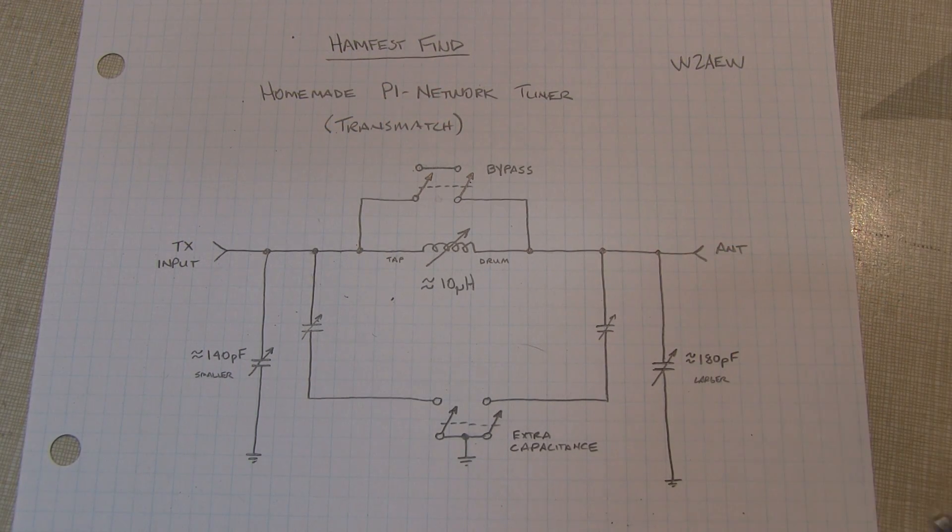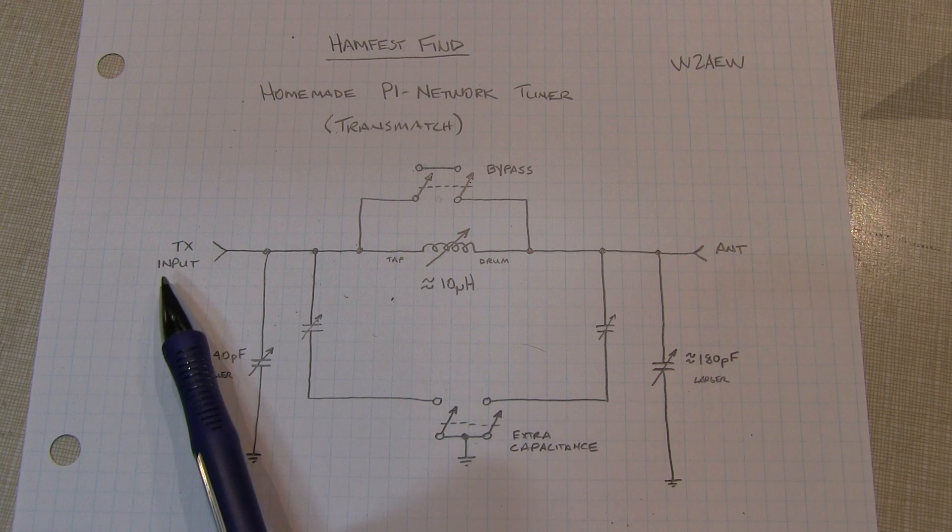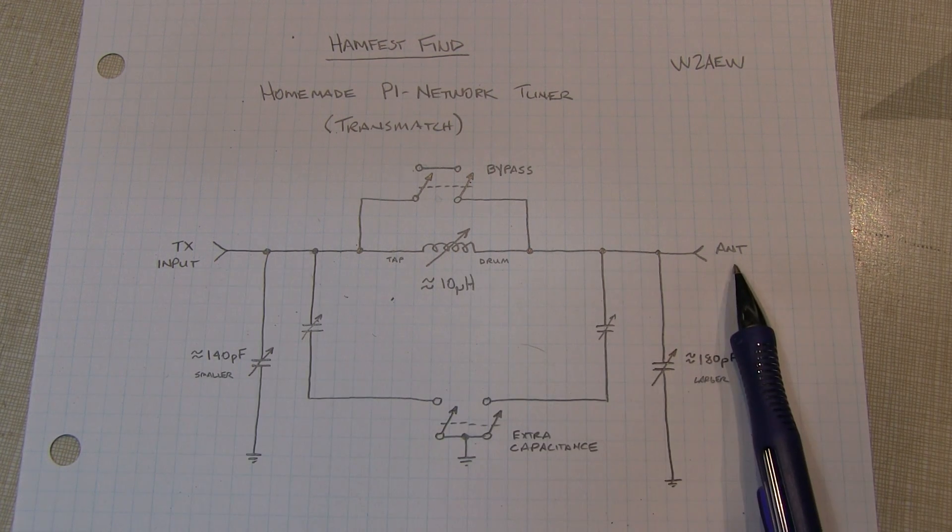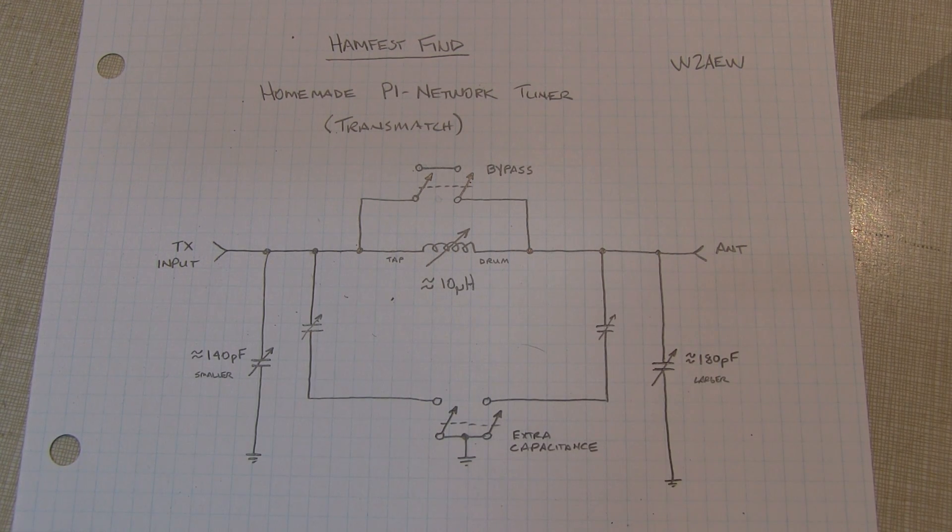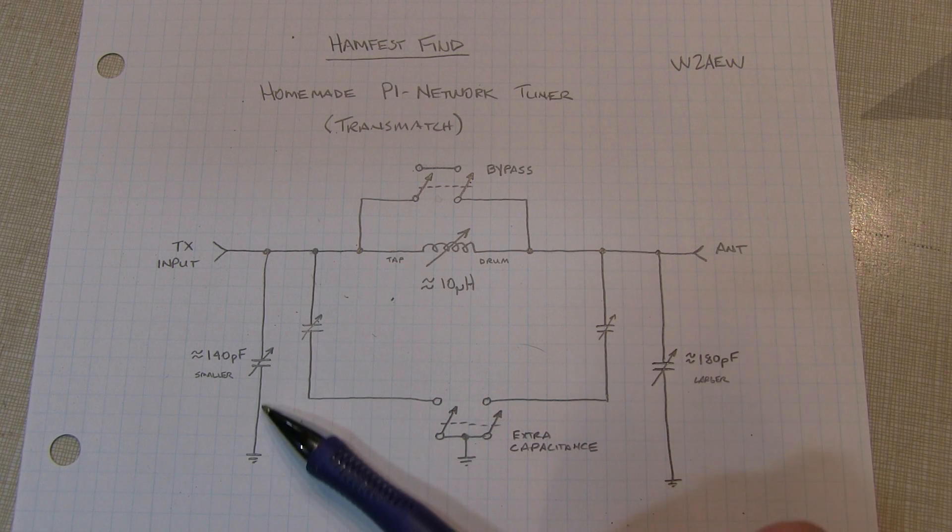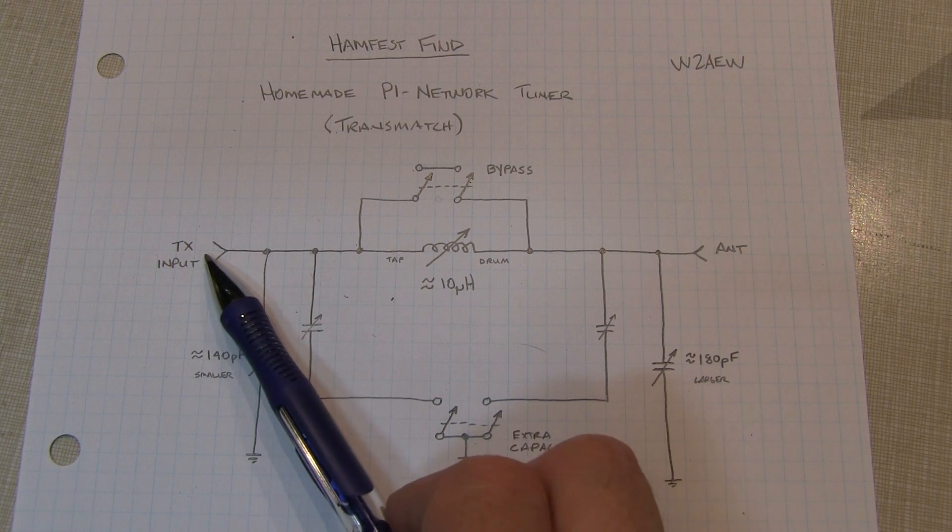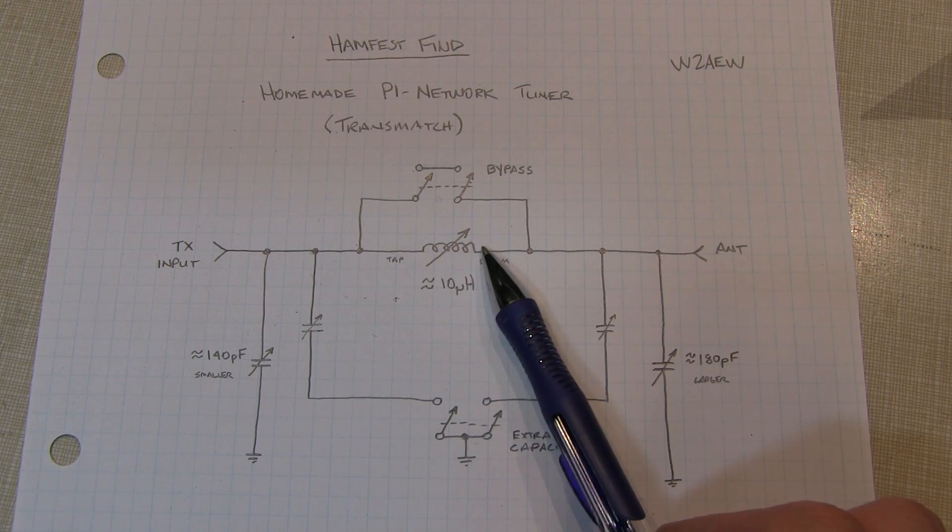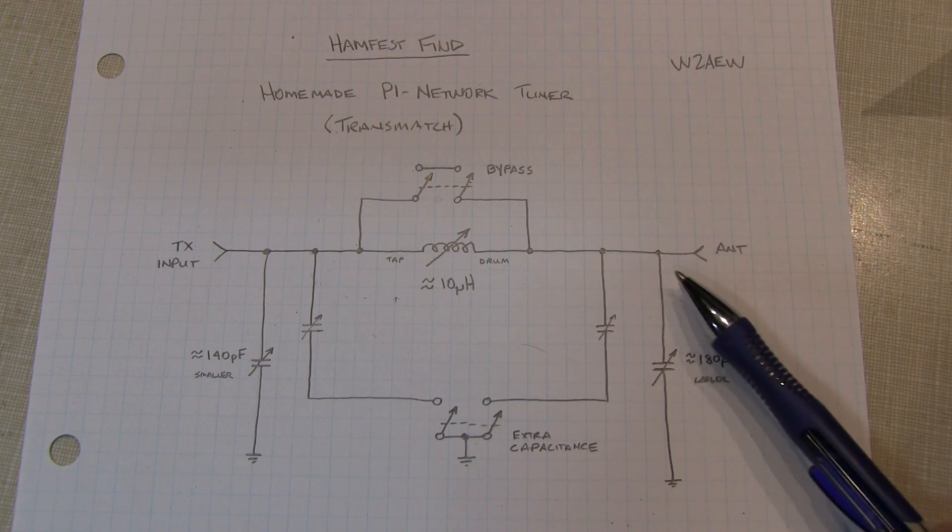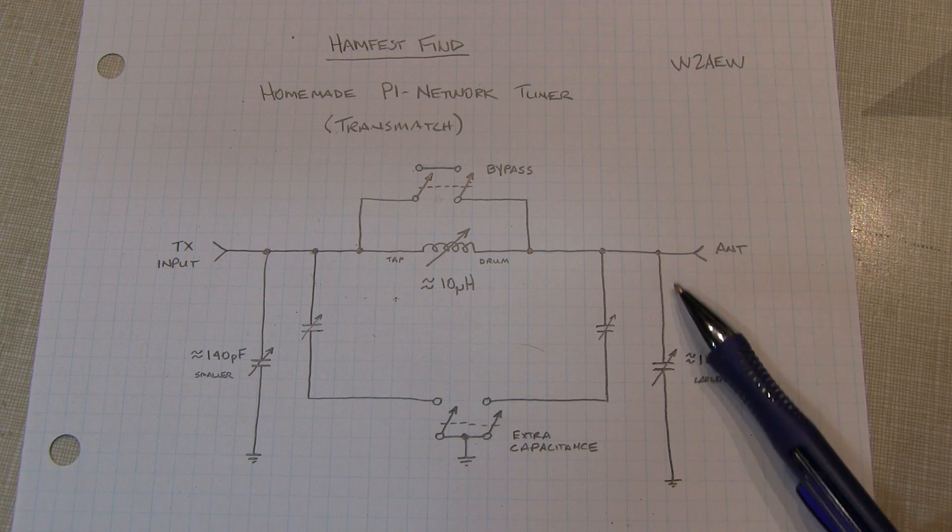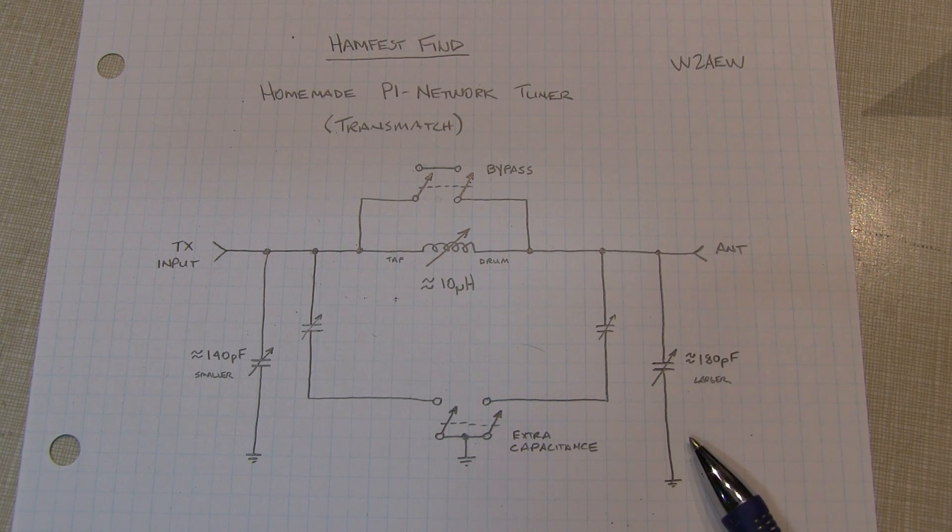Alright, so here's the schematic for the pi network tuner. Our transmit input is here, antenna output is right there, and the smaller of the two variable capacitors is right here going to ground. We go through the variable inductor here to the antenna, and then the larger variable capacitor is out here on the antenna terminal.